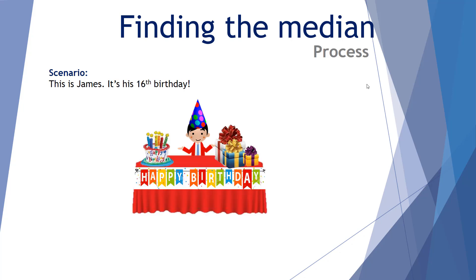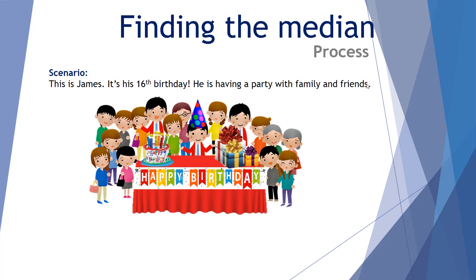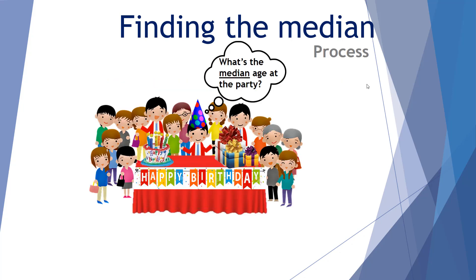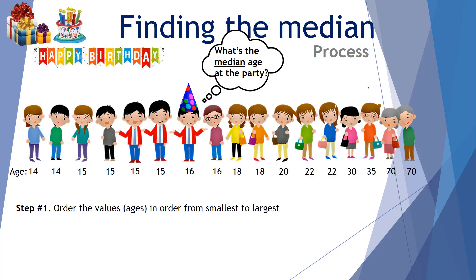This is James. It's his 16th birthday and he's having a party with family and friends. James is an inquisitive mathematician and he wants to know what is the median age at his party. Step one to find the median is to order the values — in this case, ages — from smallest to largest.